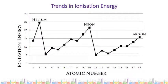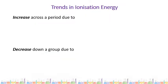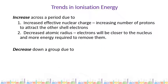On this graph, we have the trends of ionization energies across the first three periods — period one being hydrogen and helium, then period two and period three. The general trend is that ionization energy increases as you go across a period. The reason for this is there's an increased effective nuclear charge — we're increasing the number of protons, which is going to attract the outer shell electrons more strongly. The second reason is there's a decreased atomic radius, meaning electrons will be closer to the nucleus and more difficult to remove, requiring more energy.